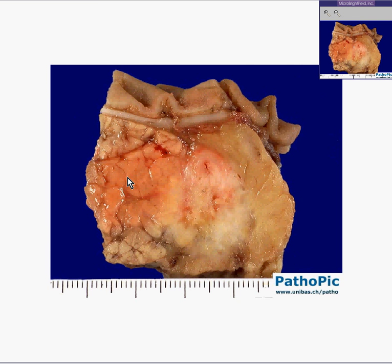In most exocrine organs — salivary gland, pancreas, lacrimal gland — you can see an overall general lobulation, which are these little lobules with a little bit of fibrous tissue between them. They still look like they're organized. You can see lobules here as well; they're just a little pinker or perhaps more hyperemic than usual.